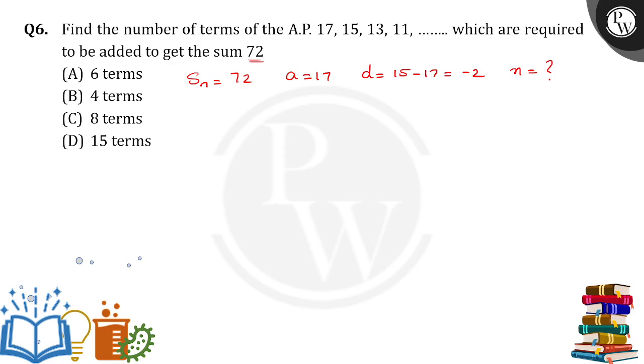So if you want to find the value of n, we use Sn equals n by 2, 2a plus n minus 1 into d. So 72 equals n by 2, 2 times 17 plus n minus 1 into minus 2.